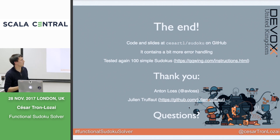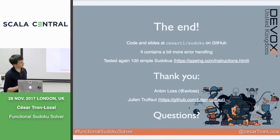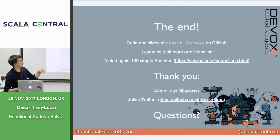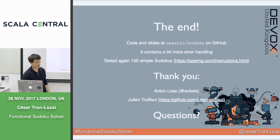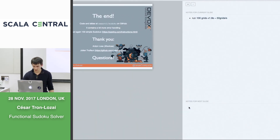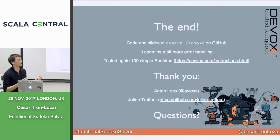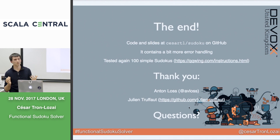The slides and code are all on GitHub. There's a bit more work around parsing and a command line tool that generates Sudoku puzzles. I tested against hundreds of them — performance was about 50 grids per second on simple grids. When you need to make guesses it doesn't work anymore. If there are no questions we can carry on later.